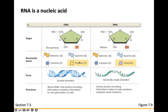Uracil replaces thymine in RNA. Generally, DNA is double-stranded while RNA is generally single-stranded. The function of DNA is to store RNA and protein-encoding information and transfer that information to the next generation of cells. RNA carries protein-encoding information, helps to make proteins, and can catalyze some reactions as well.